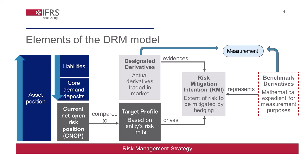The target profile is the range — i.e., risk limits — within which the current net open risk position can vary while still being consistent with the entity's risk management strategy. An entity will compare its target profile with its current net open risk position and then decide the risk mitigation intention. The risk mitigation intention is the extent to which an entity intends to mitigate the current net open risk position through the use of derivatives. These designated derivatives are traded with external counterparties, typically by the risk management function of a bank. The risk mitigation intention corresponds to what is in IFRS 9 known as the entity's risk management objective for a period and is evidenced by the designated derivatives. It is the accounting function administering the DRM model for financial reporting purposes who determines the risk mitigation intention each measurement period.